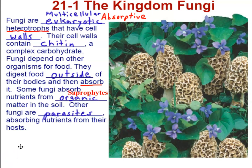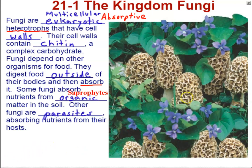Fungi have been around for a long time, and because of that they're a very diverse group. What we're looking at in this photo are morels — fungi that serve as a food source for us and other animals. They're highly sought after; people go out morel hunting, though they're hard to find. What we eat of most fungi are actually fruiting bodies — reproductive structures that grow up out of the soil. The fungus is mostly living in the soil, and it sends up these fruiting bodies to produce spores and reproduce.